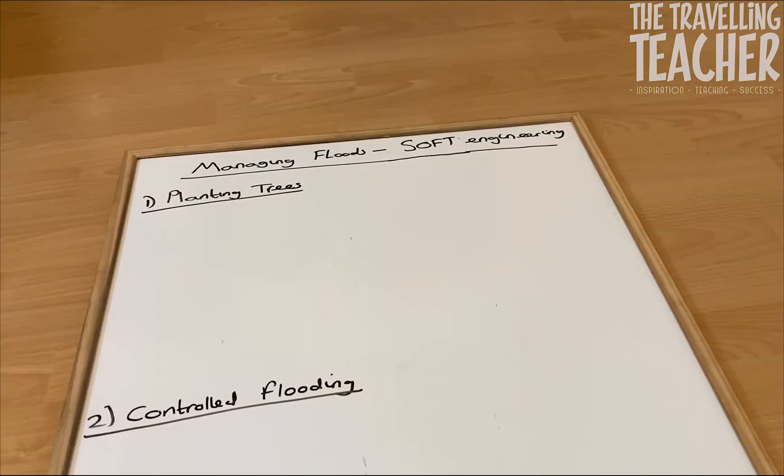OK, so now we're going to move on to the second part of this video, and this is going to be looking at soft engineering strategies, of which we're going to focus on two. So the first one is planting trees or afforestation.